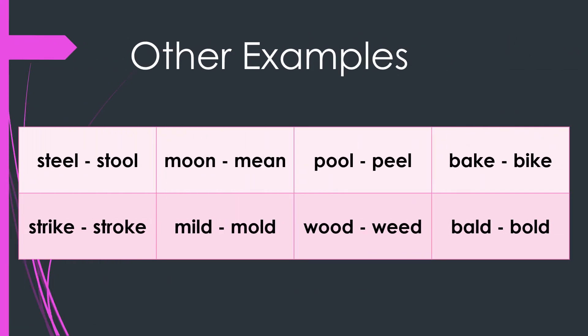Here are some other examples: Steel, Stool, Moon, Mean, Pool, Peel. Bike, Strike, Stroke. Mild, Mold, Wood, Weed, Bald, Bold.